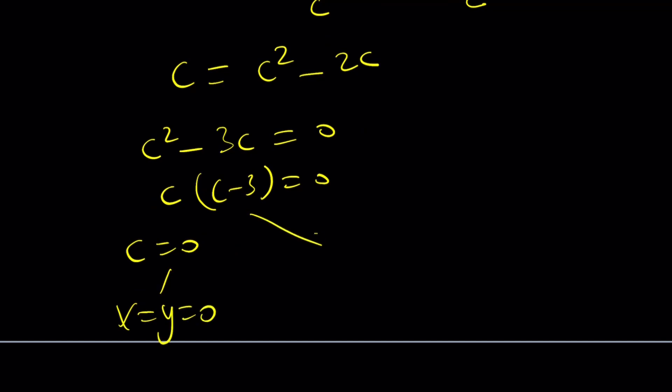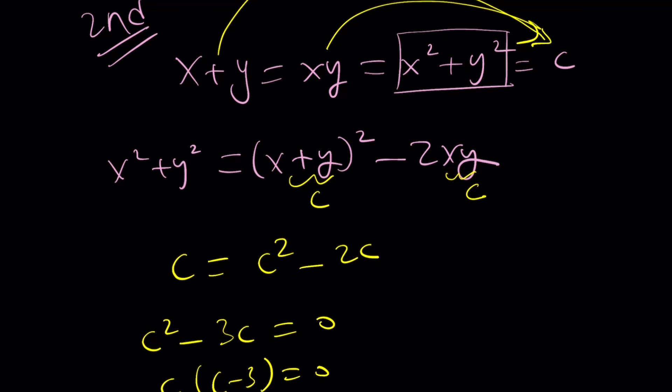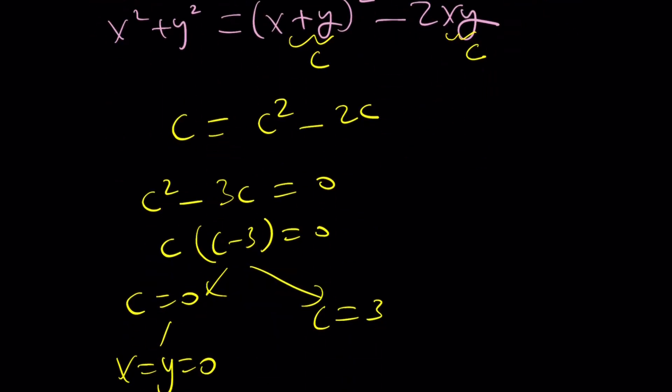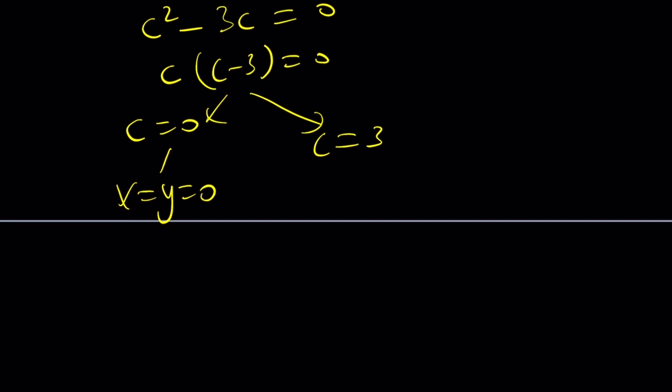And c equals 3. And now, what is that going to give you? Well, if c is equal to 3, then let's think about it. x plus y is equal to 3, xy is equal to 3, and x squared plus y squared is equal to 3. What are you going to do with that, right? There's a lot of different things you can do.